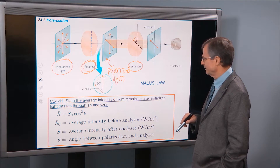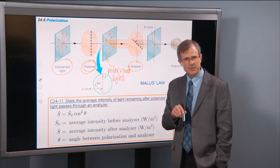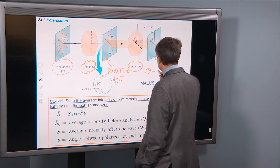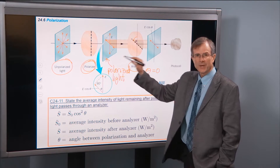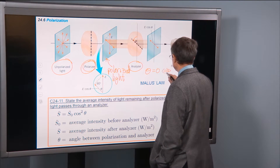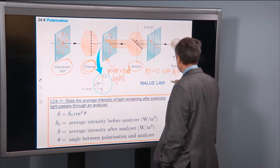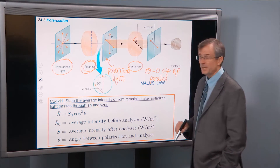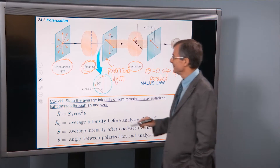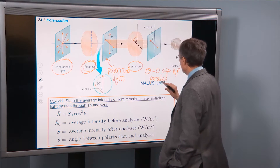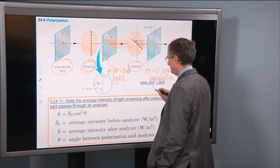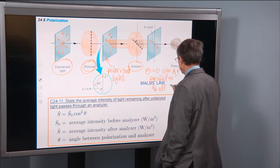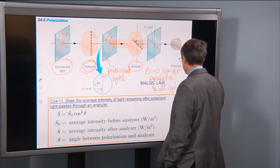I think that you can guess the answer to two of these special cases. If θ equals 0, that means the analyzer and polarizer are parallel. How much of the light should get through? Well, it should be all of it because they're in the same direction — all light gets through.